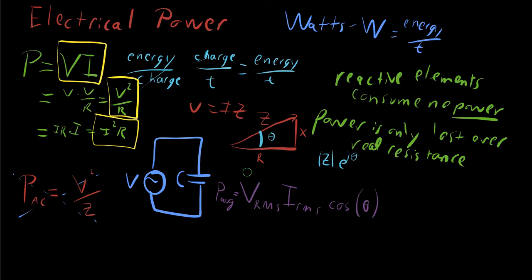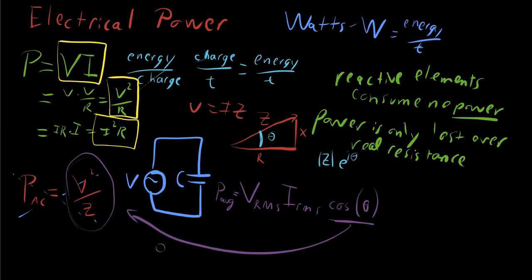This equation, and any permutation of it, gives basically the same result: the RMS values represent the potential total power, but you must multiply by cosine θ to account for the resistive fraction. And that, in a nutshell, is electrical power — both for DC and for AC systems.